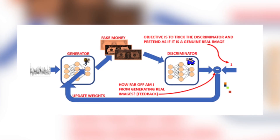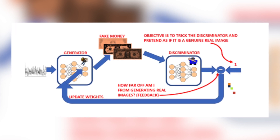For generator training: the generator produces fake images as usual; these are fed to the discriminator, which will classify them as fake or class zero. Crucially, the discriminator output is compared to ones — because the generator is trying to fool the discriminator into thinking the images are real. This error represents the feedback answering: how far am I from generating real images, and what should I do better to generate more realistic images? The generator weights are updated while the discriminator weights are frozen.